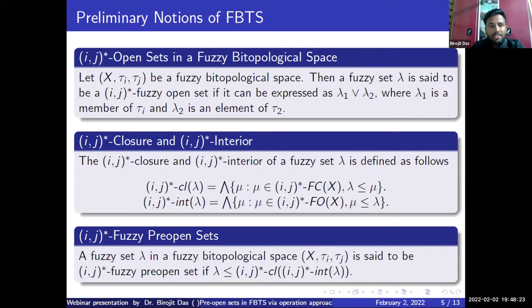These preliminary notations of fuzzy bi-topological spaces have already been published in an ESCI journal called Computational and Applied Mathematics.